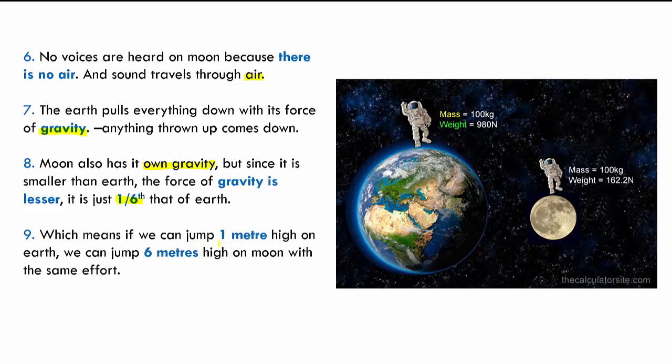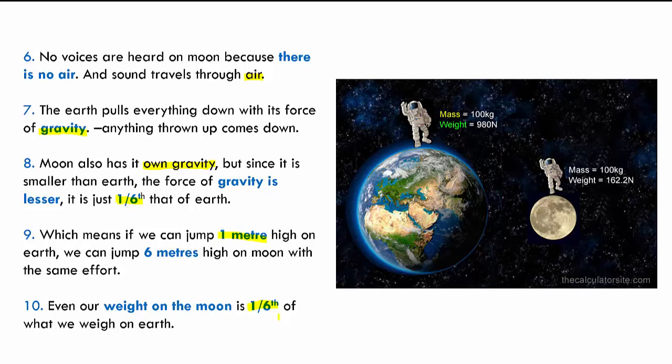If you jump one meter high on earth, you can jump six meters high on the moon with the same effort. Not just that, even your weight differs from earth to moon. Your weight on the moon is just one sixth your weight on earth. Go ahead and try to calculate your weight — suppose you are 23 kilos, you put 23 divided by 6, and whatever answer you get, that is your weight on the moon. Isn't that interesting?